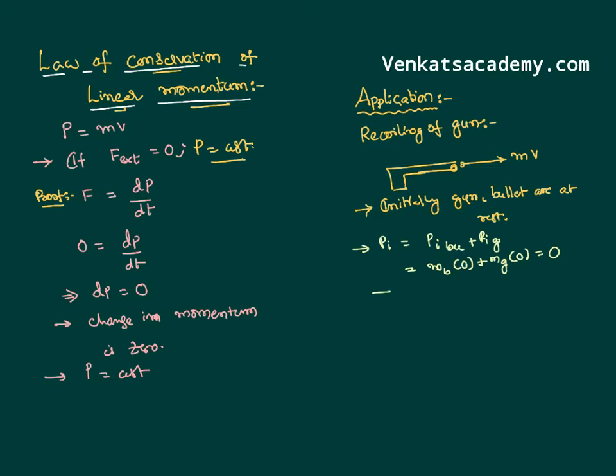There is no external force acting on the system. Therefore, according to the law of conservation, when F external is zero, I can write P initial equals P final. So P initial is zero. P final is P final of the bullet plus P final of the gun. So I can say momentum of the gun final is minus momentum of the bullet final.